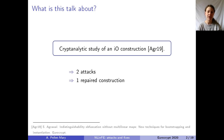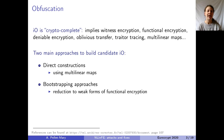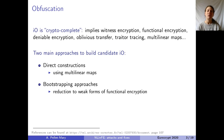Let me briefly start with IO. You probably already know that IO is a very useful tool for constructing cryptographic primitives. There have been multiple candidate IO constructions proposed so far, which can be roughly grouped into two categories.